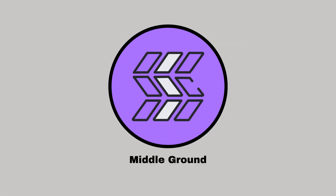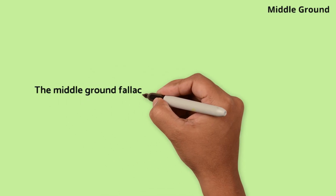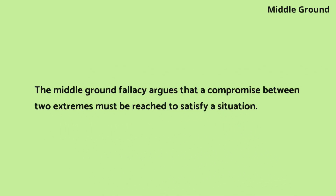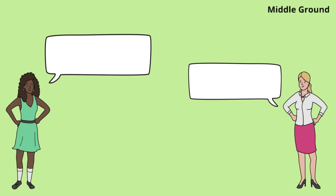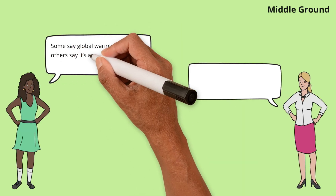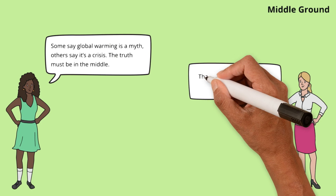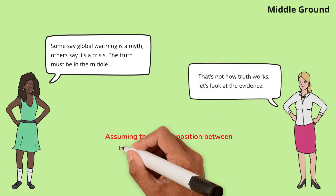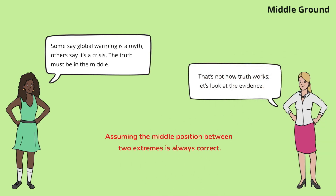Middle ground fallacy. The middle ground fallacy argues that a compromise between two extremes must be reached to satisfy a situation. Julia assumes the truth must be in the middle of two opposing views. Amber challenges this assumption, reminding us that the truth can sometimes lie at one extreme or be entirely different.